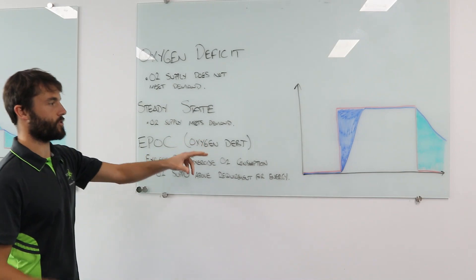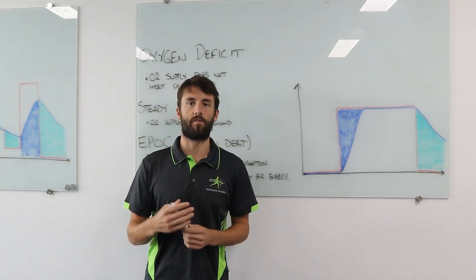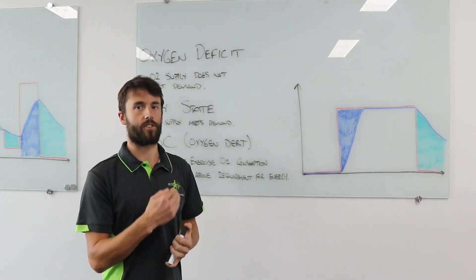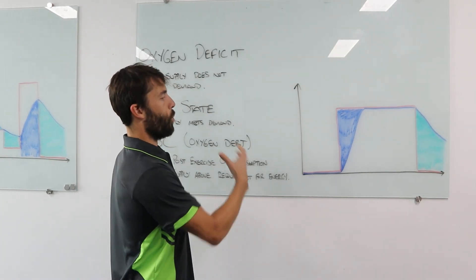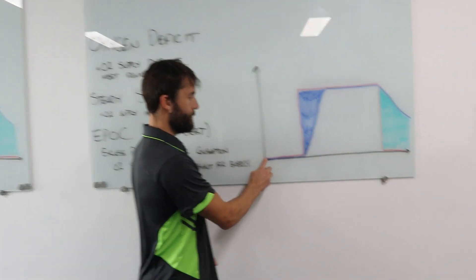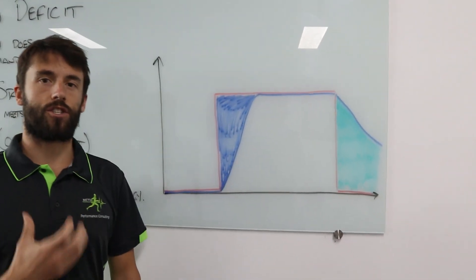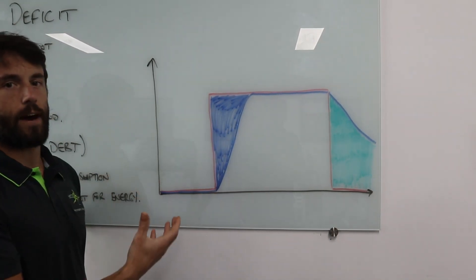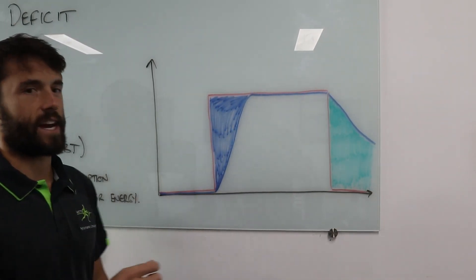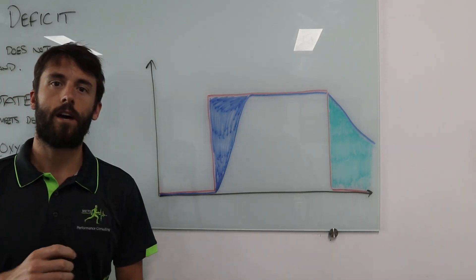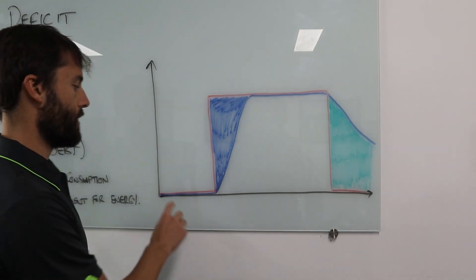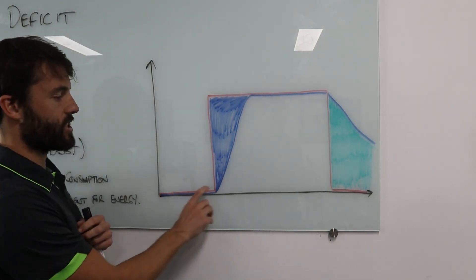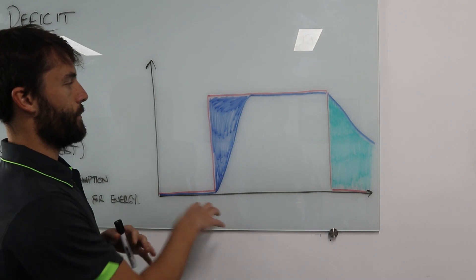Let's come over to this graph, which you should be quite familiar with — it was on last year's exam with about three multiple choice questions directly associated with it. The red line indicates the oxygen demand of the body: right down here while the red line is really low, that's basically at rest. The blue line indicates how much oxygen supply we currently have. While the blue and red lines are together, we're in a steady state — our oxygen supply is matching the demand.